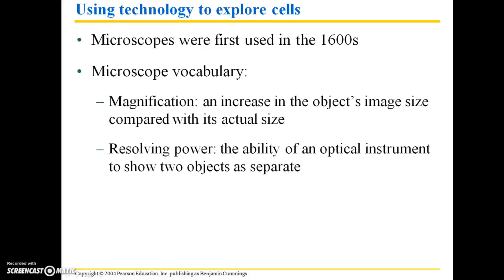In order to understand how biologists study cells, you have to know a little bit about microscopes, because they are the primary tools with which we view cells, which are mostly microscopic to our unaided eyes. Microscopes were first used all the way back in the 1600s, but since then the technology has improved a lot and we now have some pretty advanced microscope types.